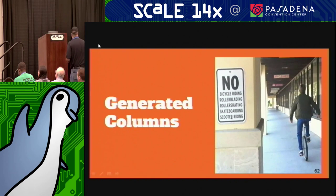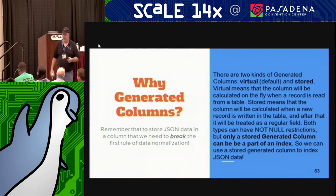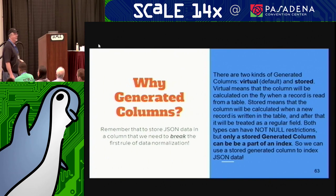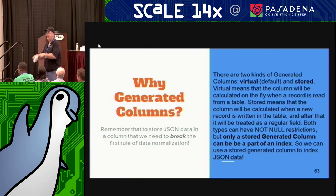One of the problems with the JSON data type is you cannot index that column with a normal SQL index. Since we're breaking the first rule of database normalization, you just can't index all the junk in there. So we have an option called a generated column. Generated columns come in two types: virtual, which does the math at read time to get the value you want, or stored, which does the math and stores it — materializes that value into the data.